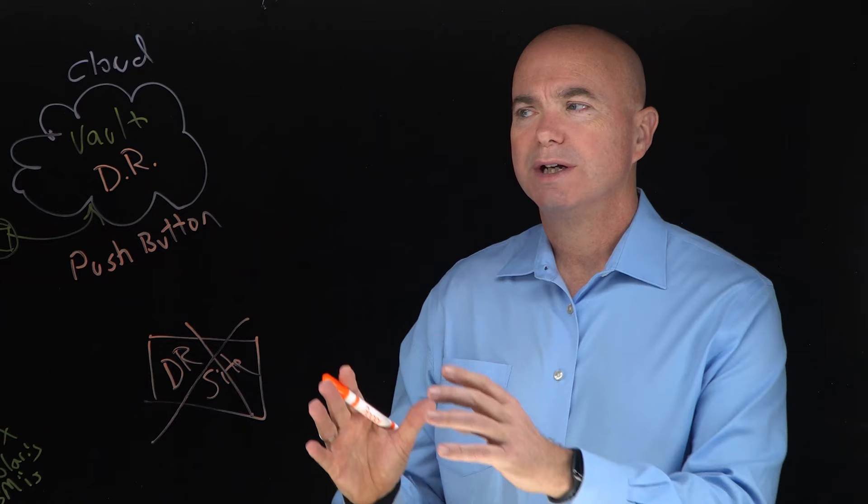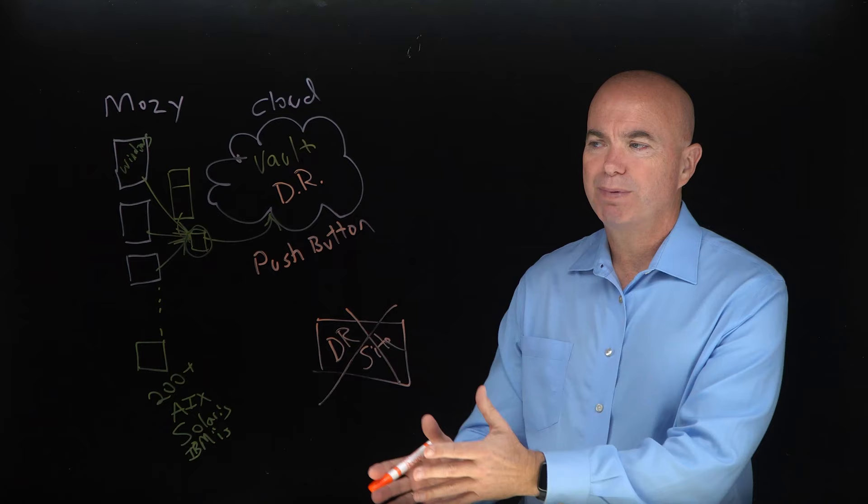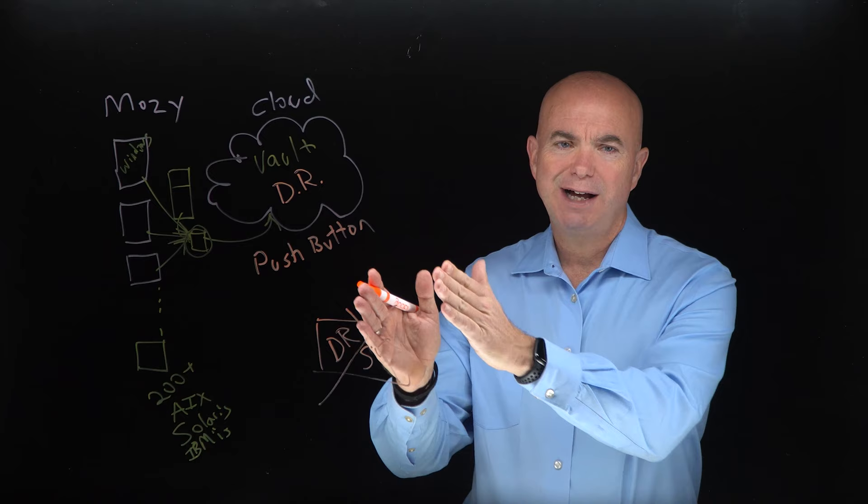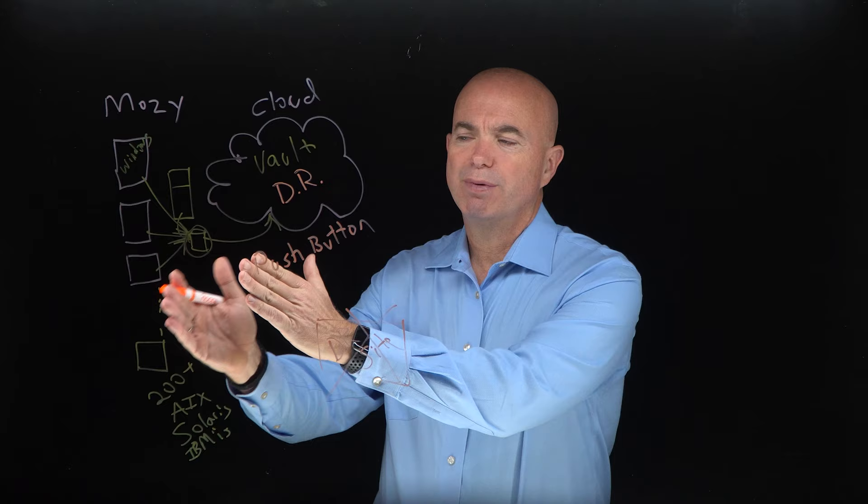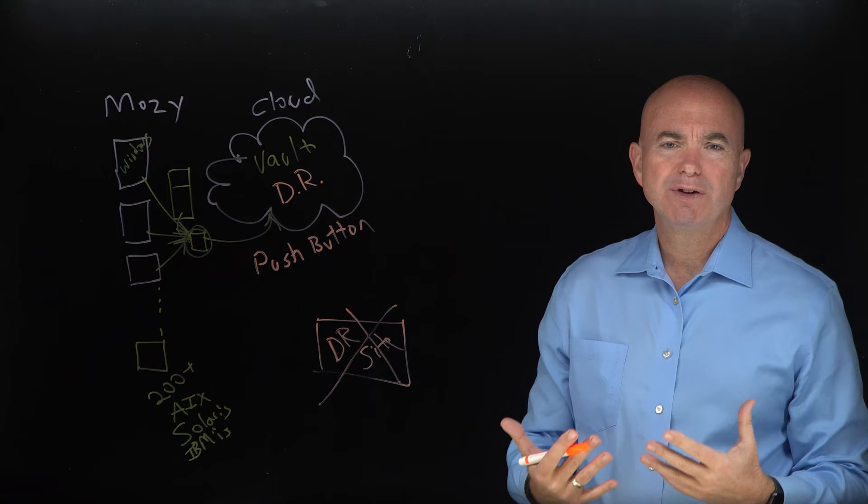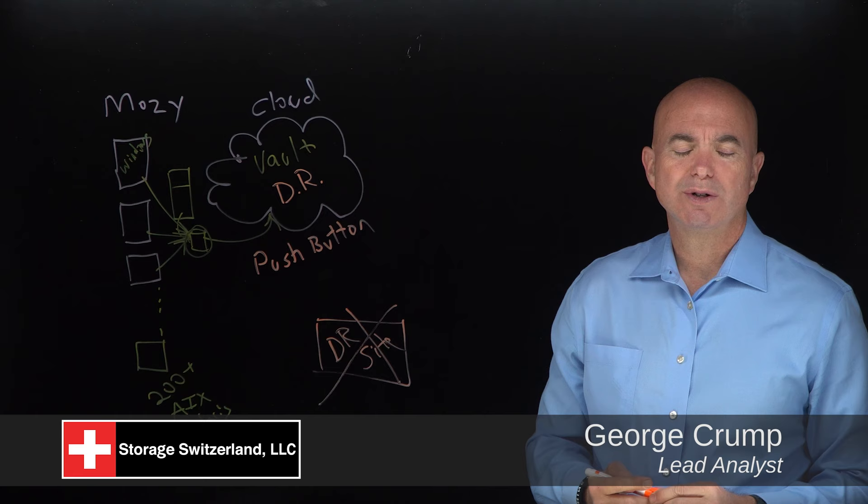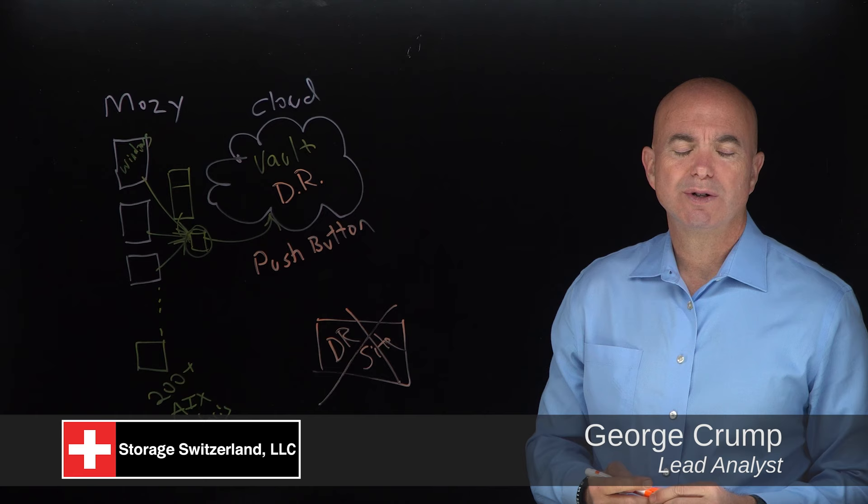So for Mosey customers, the transition to a Carbonite server makes a lot of sense. You pick up a much broader platform coverage, you also pick up a really critical feature in cloud recovery, and then you also pick up the ability to facilitate on-prem, fast on-prem recovery capabilities. So it's a real gain, I think, for the typical Mosey customer and certainly something that they should look at. I'm George Crump, Lead Analyst for Storage Switzerland.